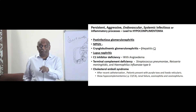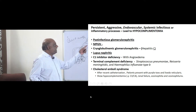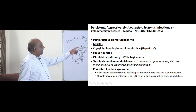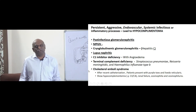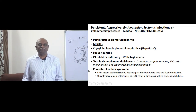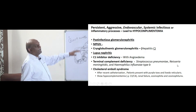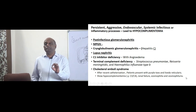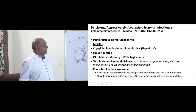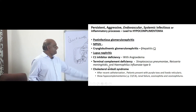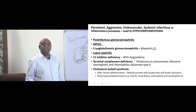Similarly, lupus nephritis — lupus is autoimmune and exhausts immune complexes, leading to hypocomplementemia. These are the conditions associated with hypocomplementemia. Also remember: C1 esterase inhibitor deficiency associated with angioedema also presents with hypocomplementemia.